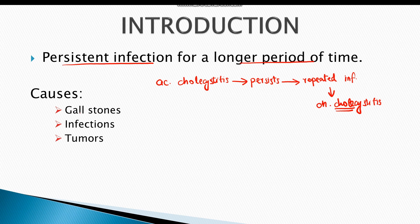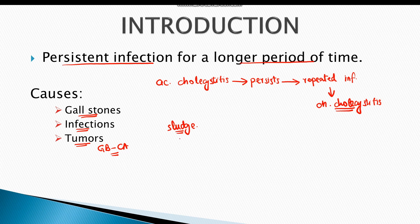The most common causes of chronic cholecystitis include gallstones, presence of infections, and certain tumors such as tumor of the cystic duct or gallbladder carcinoma itself. Moreover, non-solid crystals are also present forming a sludge. This sludge can also block the cystic duct, resulting in chronic inflammation.